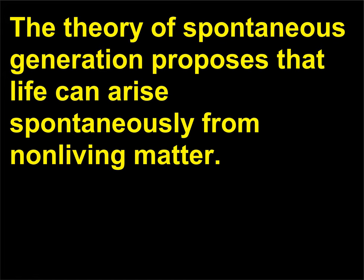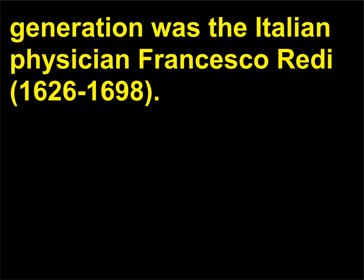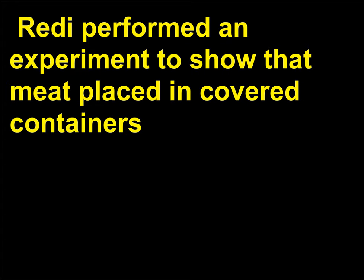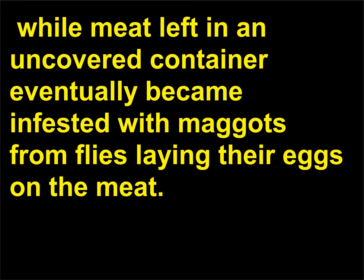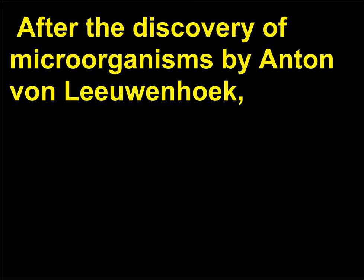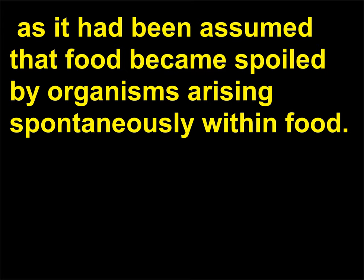The theory of spontaneous generation proposes that life can arise spontaneously from non-living matter. One of the first scientists to challenge this theory was the Italian physician Francesco Redi (1626–1698). Redi performed an experiment showing that meat placed in covered containers — either glass-covered or gauze-covered — remained free of maggots, while meat left in an uncovered container eventually became infested with maggots from flies laying their eggs on the meat. After the discovery of microorganisms by Anton von Leeuwenhoek, the controversy surrounding spontaneous generation was renewed, as it had been assumed that food became spoiled by organisms arising spontaneously within food.